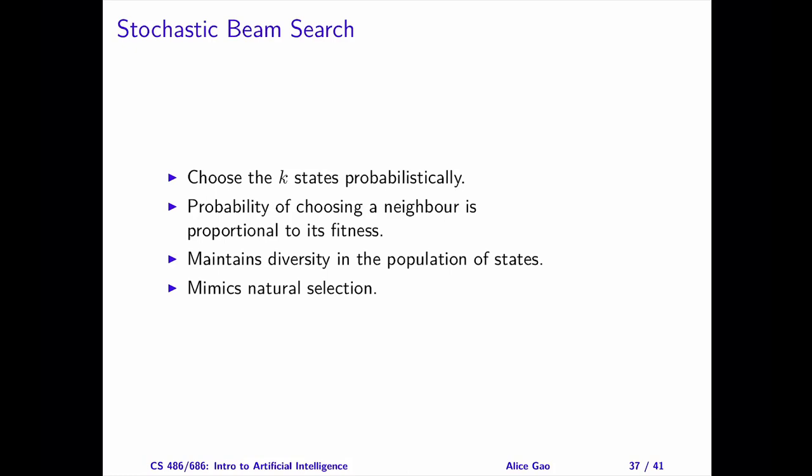For stochastic beam search and the genetic algorithm, we want to convert the goodness of a state to a probability, so it is more convenient to talk about fitness rather than cost. Fitness is often the negative of cost — minimizing cost is equivalent to maximizing fitness. The probability of choosing a neighbor is proportional to the state's fitness. Stochastic beam search is better than beam search at maintaining diversity in the population, since there is a positive probability of choosing every neighbor, making the search less likely to cluster in the best region found so far.